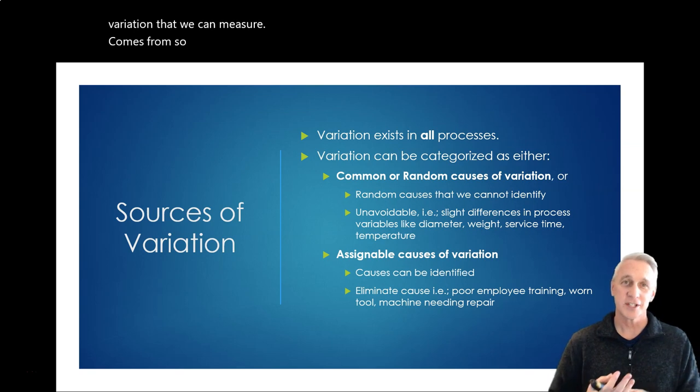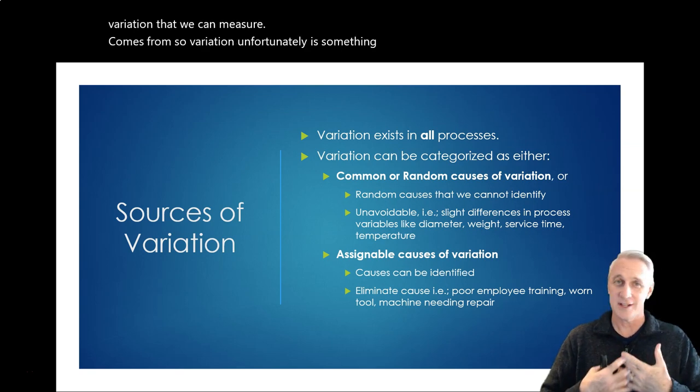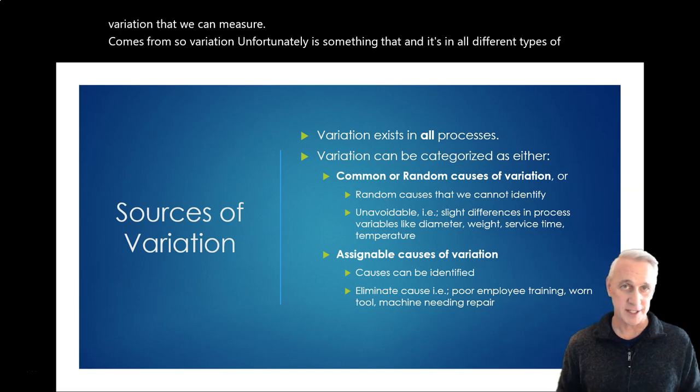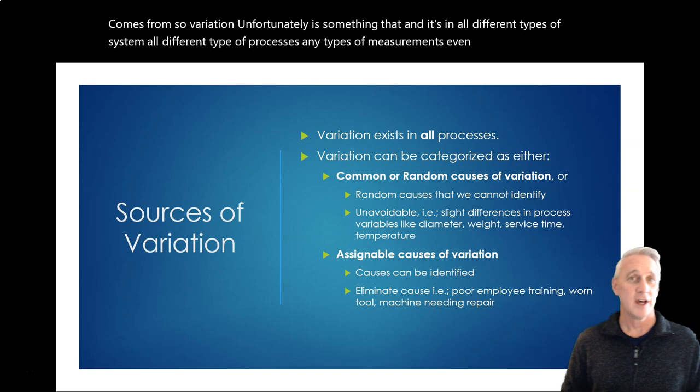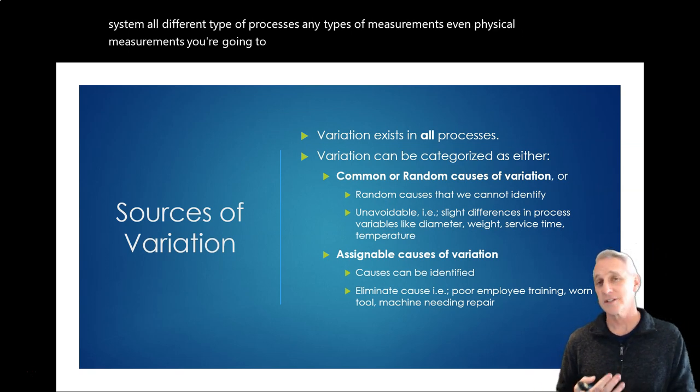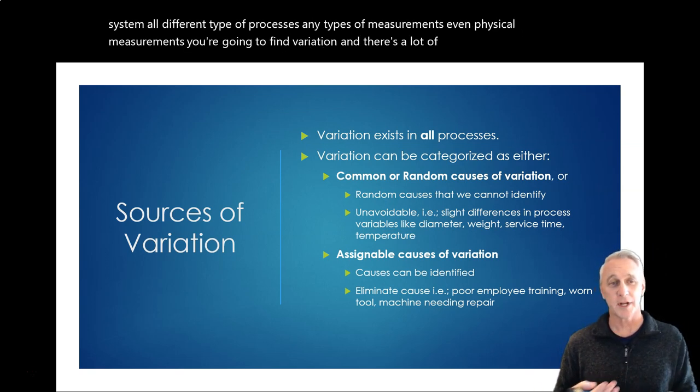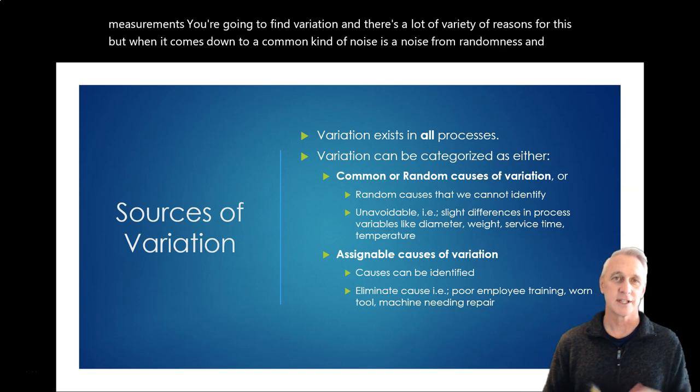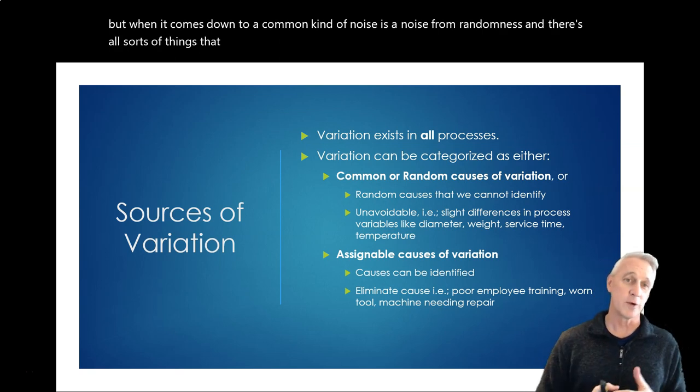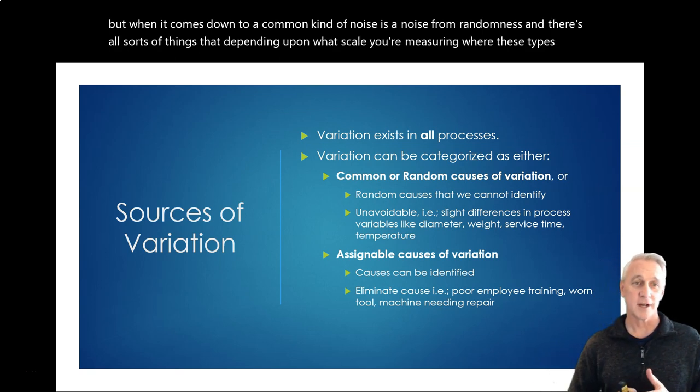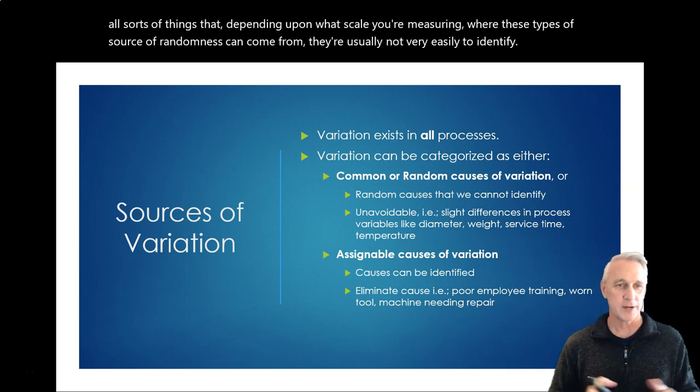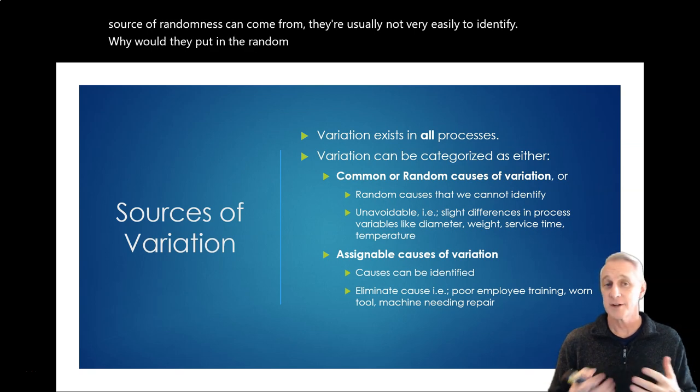So variation, unfortunately, is something that exists and it's in all different types of systems, all different types of processes, any types of measurements, even physical measurements. You're going to find variation and there's a lot of variety of reasons for this. But what it comes down to commonly is noise from randomness. And there's all sorts of things that, depending upon what scale you're measuring, these types of sources of randomness can come from. They're usually not very easily to identify, hence why they're put in the random category, and a lot of times they're unavoidable.